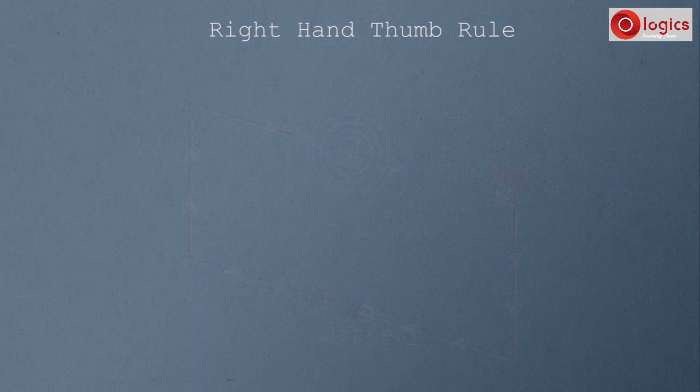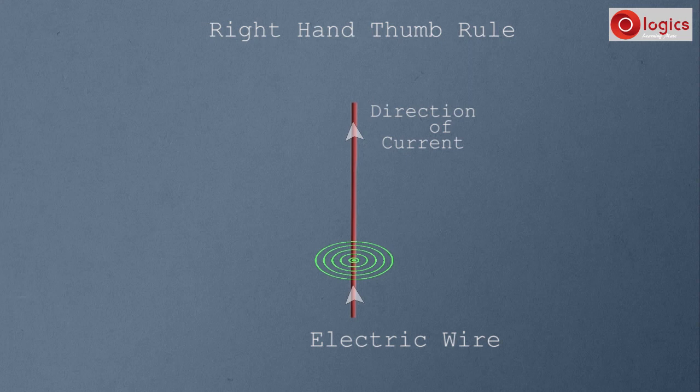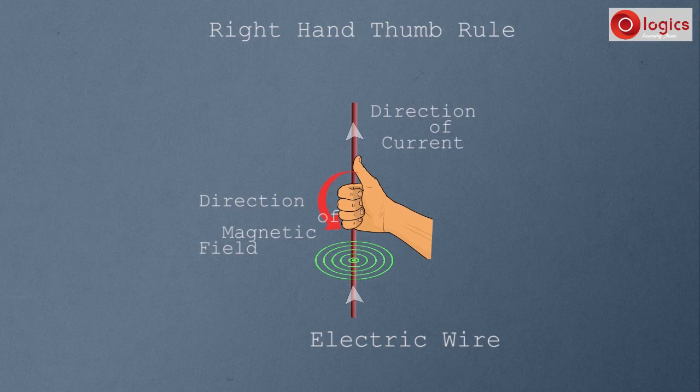Let's see it from another view. This is the electric wire and current is flowing in this direction. To find the direction of the magnetic field, simply keep the thumb in the direction of current and close your other fingers. The direction in which the fingers close gives the direction of the magnetic field. So the field direction is like this.